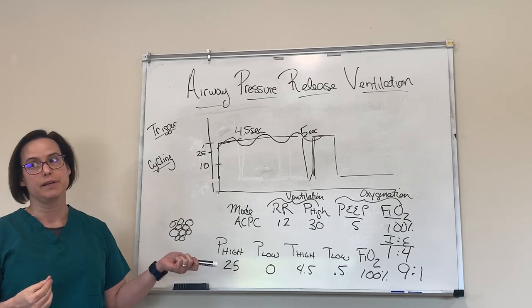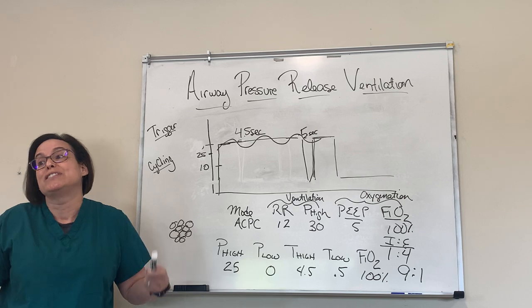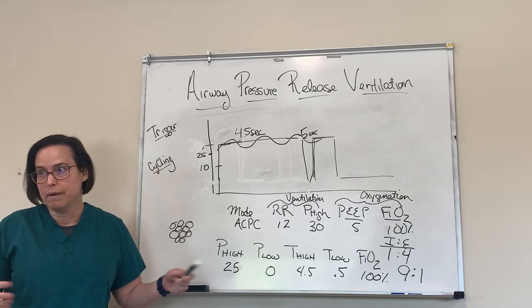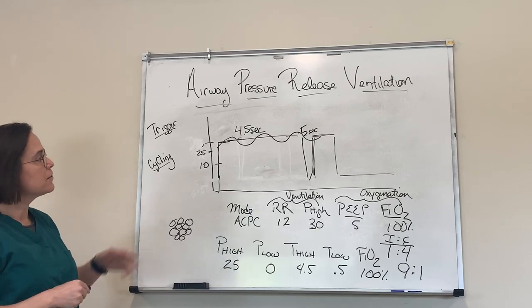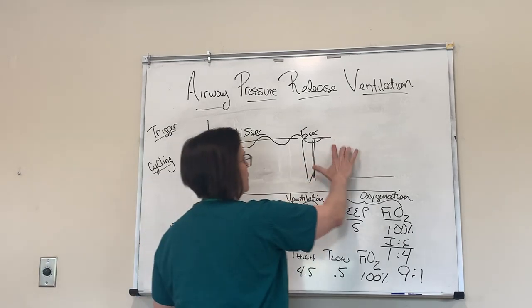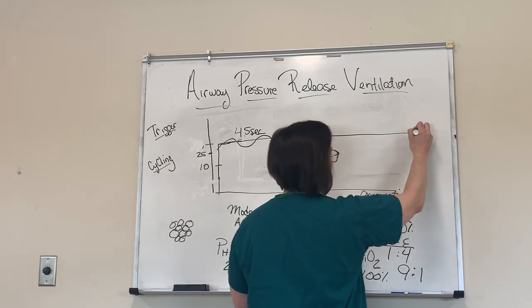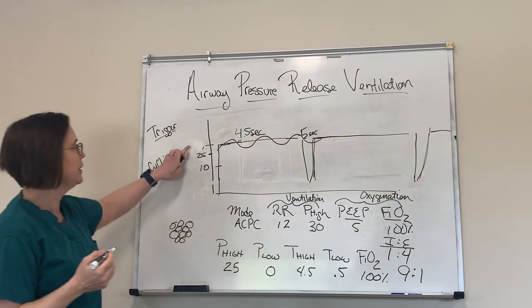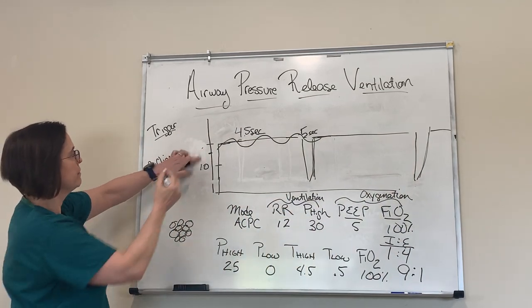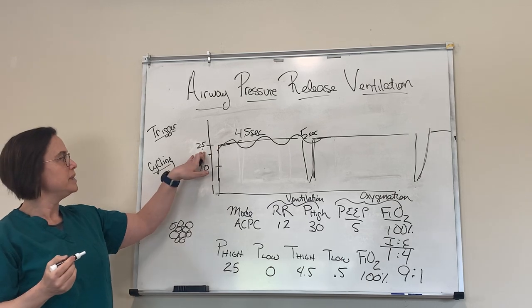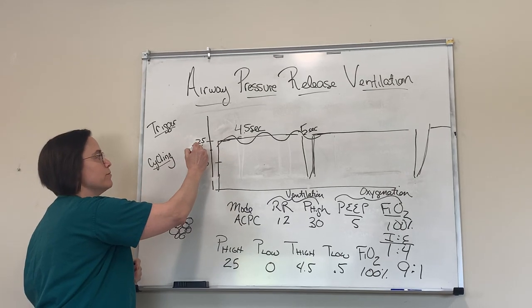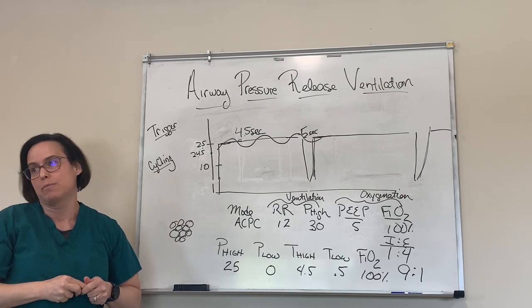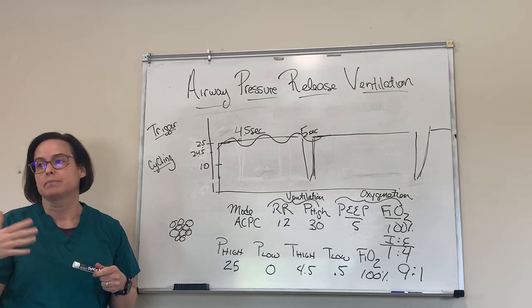Generally when we're starting someone on this, we're doing it as an oxygenation salvage therapy — so they usually need high settings when you get started. They're breathing over it, at this high pressure almost all the time, not letting pressure get to zero. We'll say that this is 25 up here, so now my mean airway pressure is like 24.5 — really high. I've really optimized that mean airway pressure and I'm already optimizing my oxygenation.